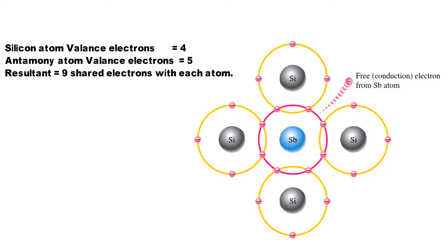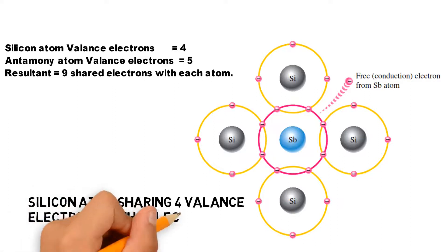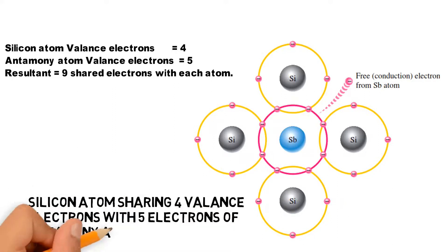Because the pentavalent atom gives up an electron, it is often called a donor atom. The number of conduction electrons can be carefully controlled by the number of impurity atoms added to the silicon.